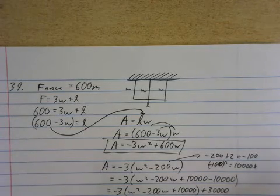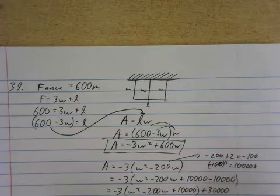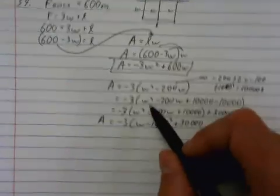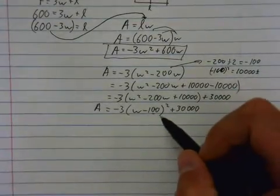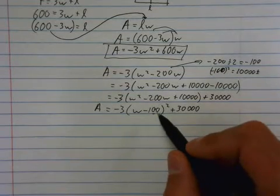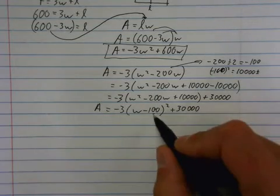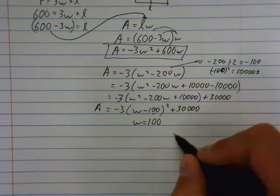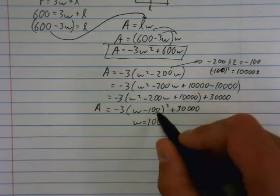So there's my vertex. This is the axis of symmetry of the vertex. Oh man, did I not show that again? Whoops, sorry about that. This is the axis of symmetry of the vertex. So W is equal to 100. That will maximize because this is H.